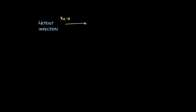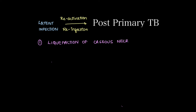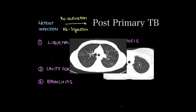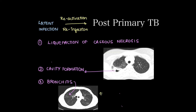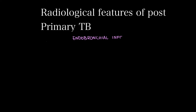Latent infection can undergo reactivation or reinfection leading to post primary tuberculosis or TB reactivation. The features are liquefaction of caseous necrosis which can form cavitation surrounded by consolidation. It can cause bronchitis or endobronchial spread of infection leading to centrolobular nodules showing tree-in-bud pattern. In end stage it can show fibrotic or atelectatic changes.